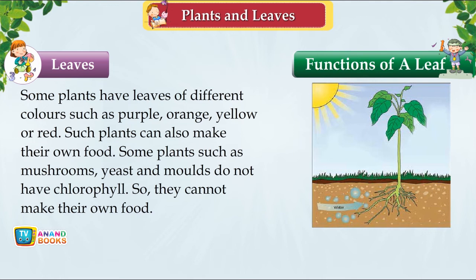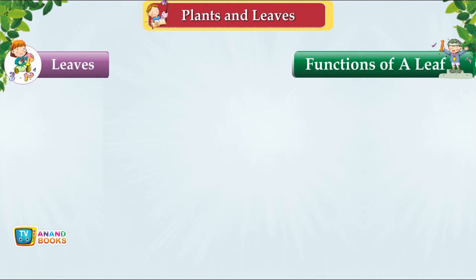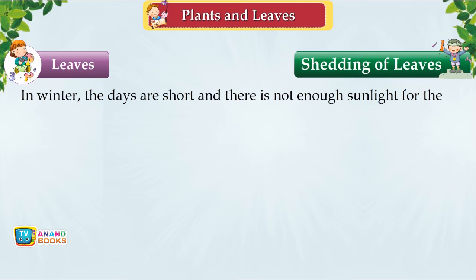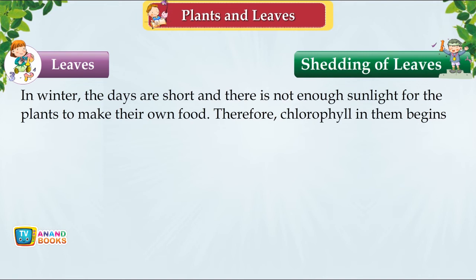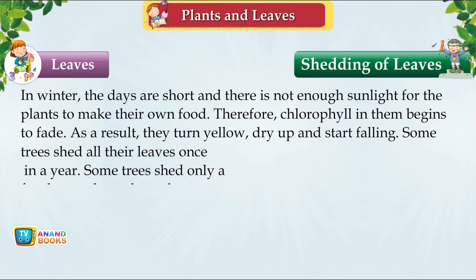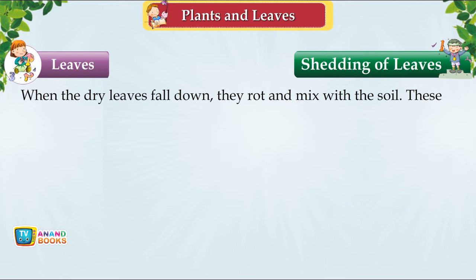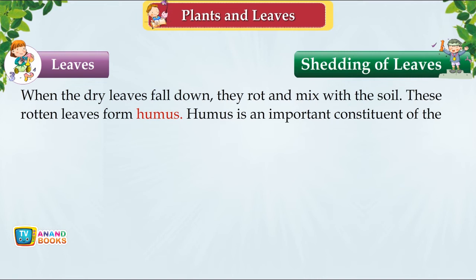Photosynthesis summary: sunlight and carbon dioxide enter through stomata; oxygen is released; food goes to other parts; water enters through the roots. Shedding of Leaves. In winter, days are short with insufficient sunlight, so chlorophyll begins to fade, leaves turn yellow, dry up and fall. Some trees shed all leaves once a year; others shed only a few throughout the year. Fallen leaves rot and mix with the soil to form humus — an important component of topsoil that makes the soil fertile.